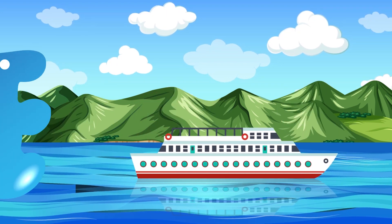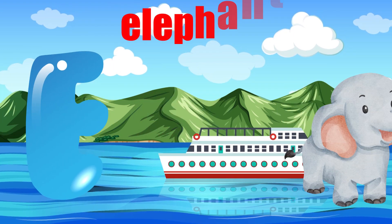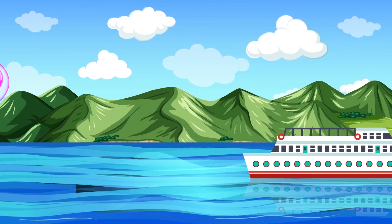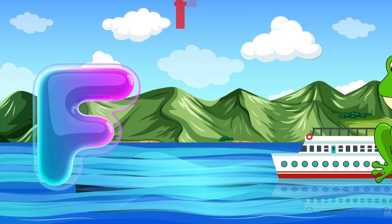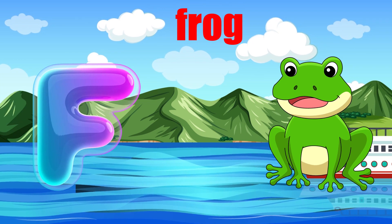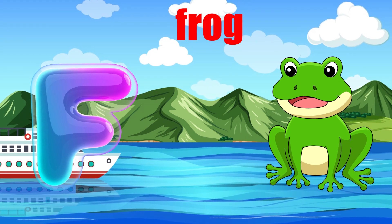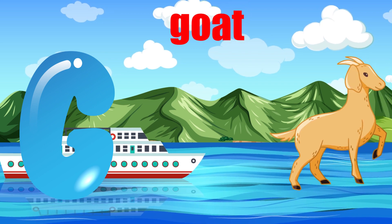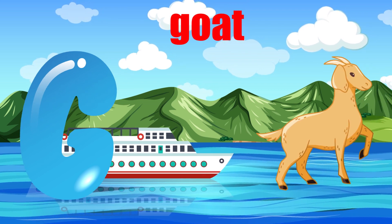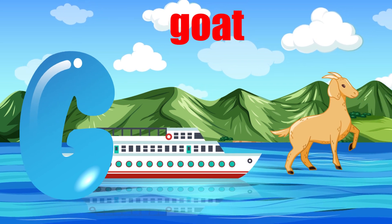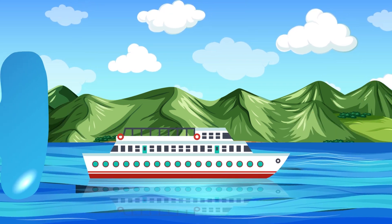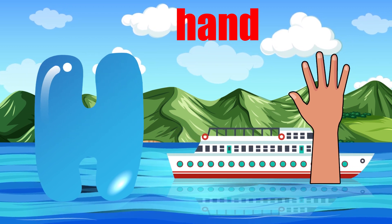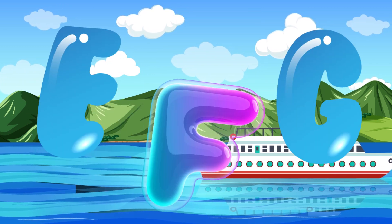E is for elephant, e-e-elephant. F is for frog, f-f-frog. G is for goat, g-g-goat. H is for hand, a-a-hand.